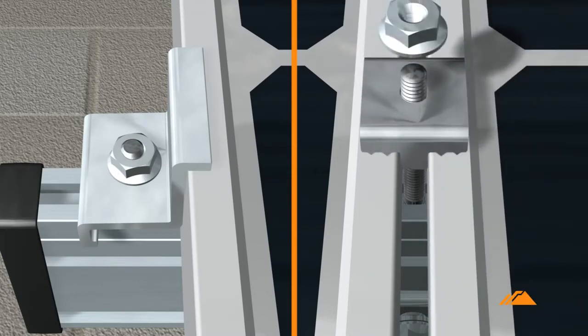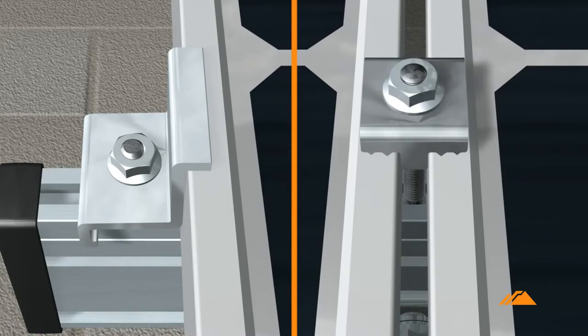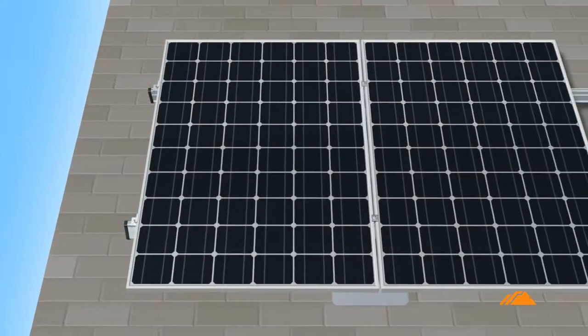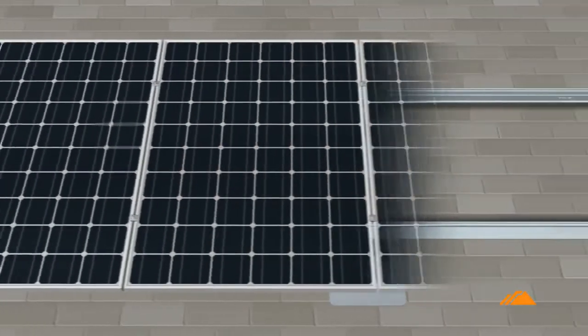Then grounding mid-clamps for each additional module until completing the row with two more end clamps.